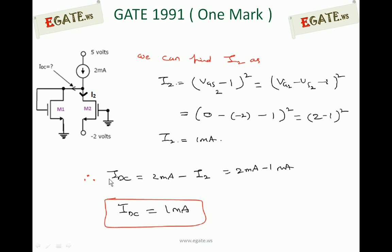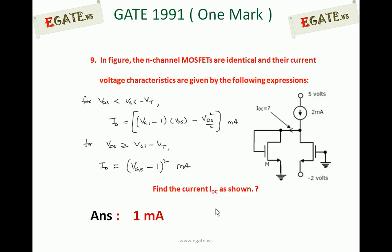Applying KCL: IDC = 2 mA − I2 = 2 mA − 1 mA = 1 mA. So the required current IDC is 1 milliampere, which is the correct answer for this question.